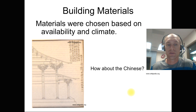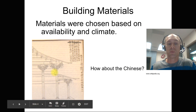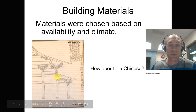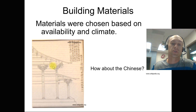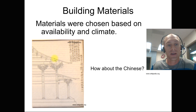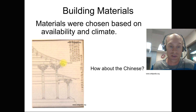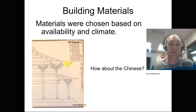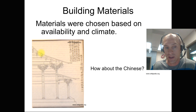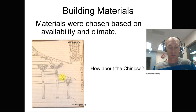The Chinese used mostly wood. But since wood rots away, we don't have any surviving historical buildings from China — we do have historical drawings, though. Their designs didn't change very much over time, so that's how we know they built largely out of wood.